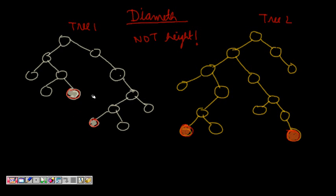Let's see with examples. This is tree 1, and here the maximum diameter is the number of nodes in the path between the maximum distance leaf nodes. If I consider these two leaf nodes, the length is 1, 2, 3. But if I consider this node and this node, the length is 1, 2, 3, 4, 5, 6, 7.